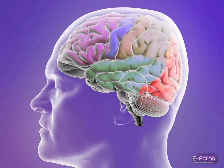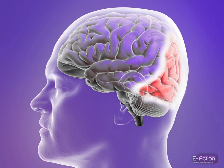The occipital lobe is responsible for visual perception and processing. If a focal seizure occurs in this part of the brain, it may produce visual disturbances or visual hallucinations, such as multicolored balls or patterns.